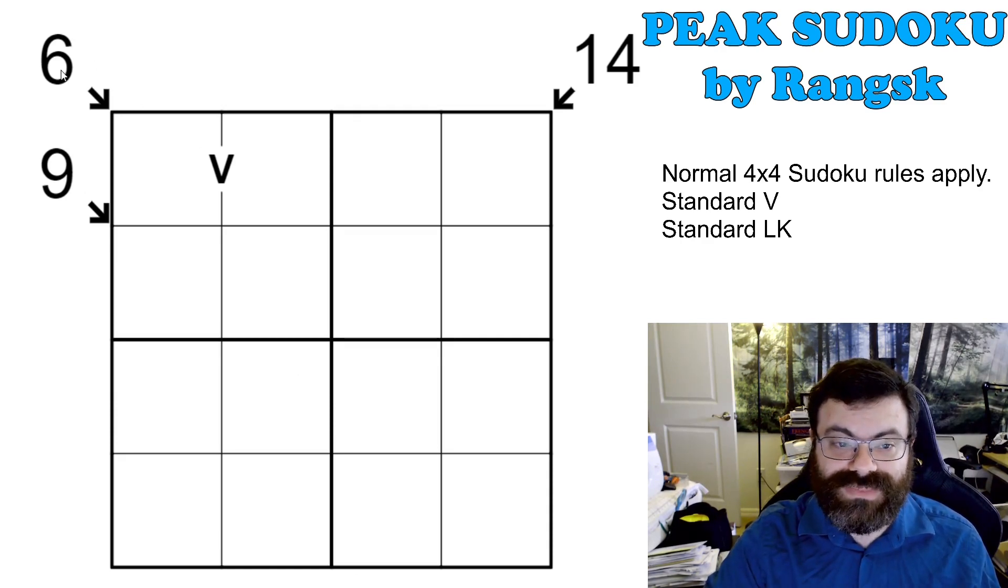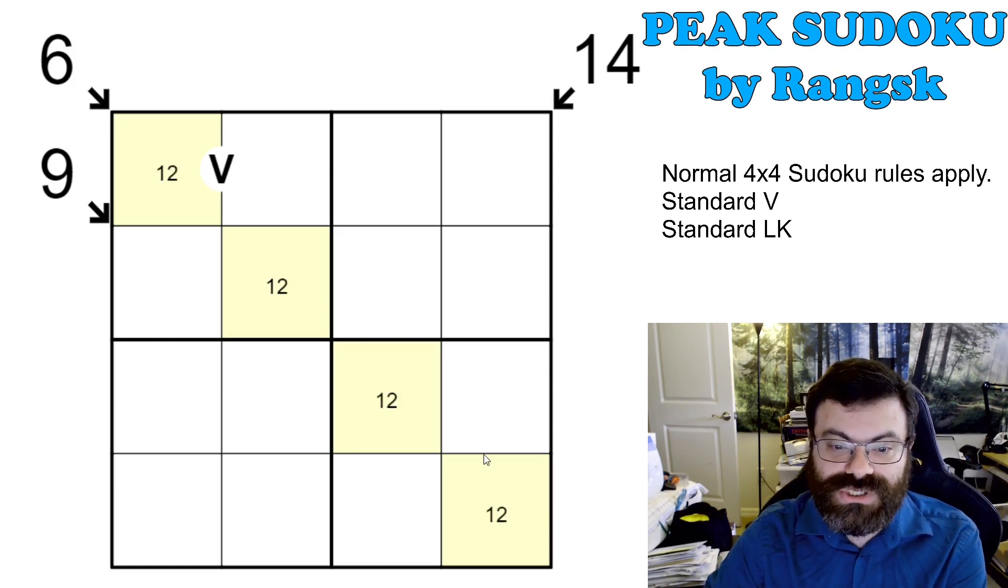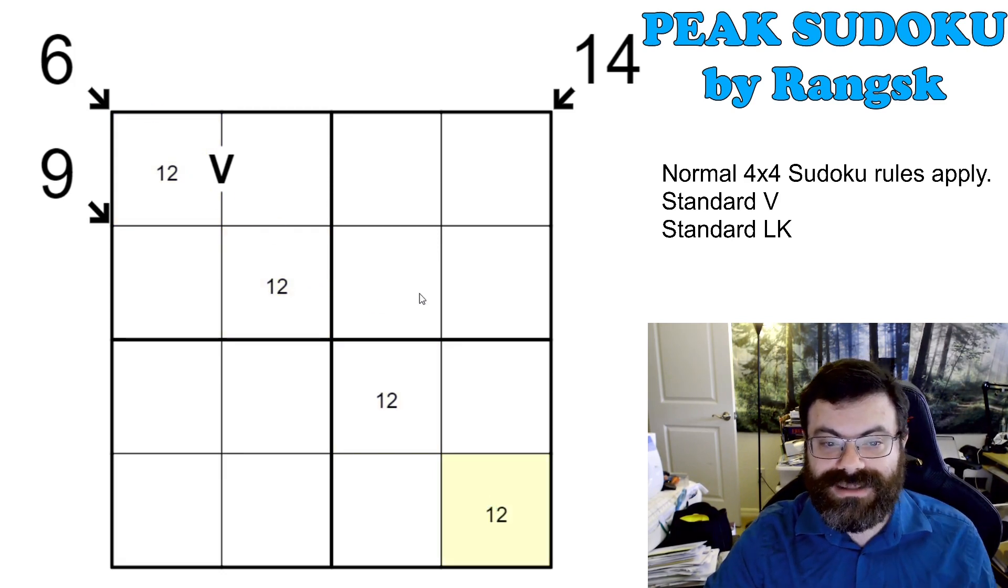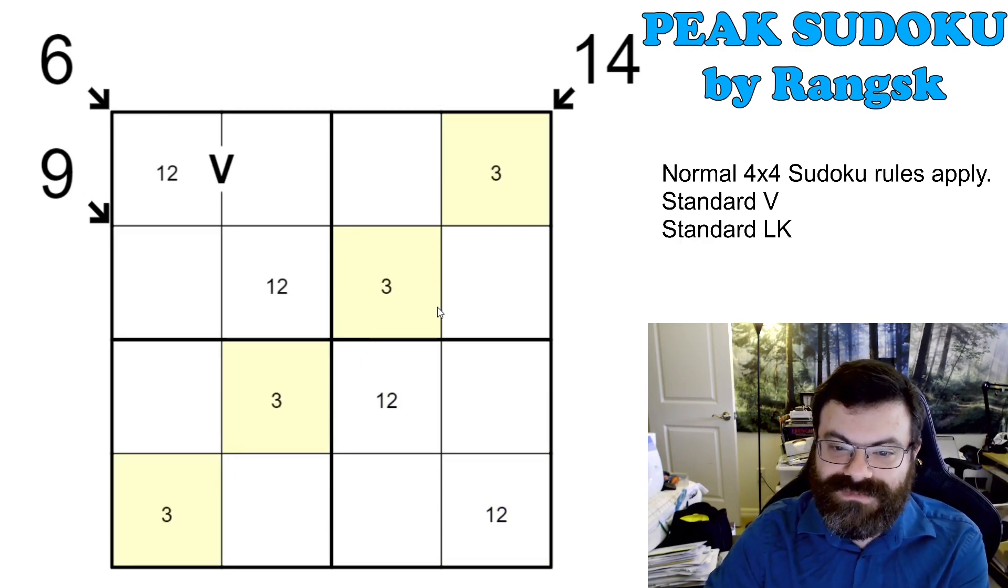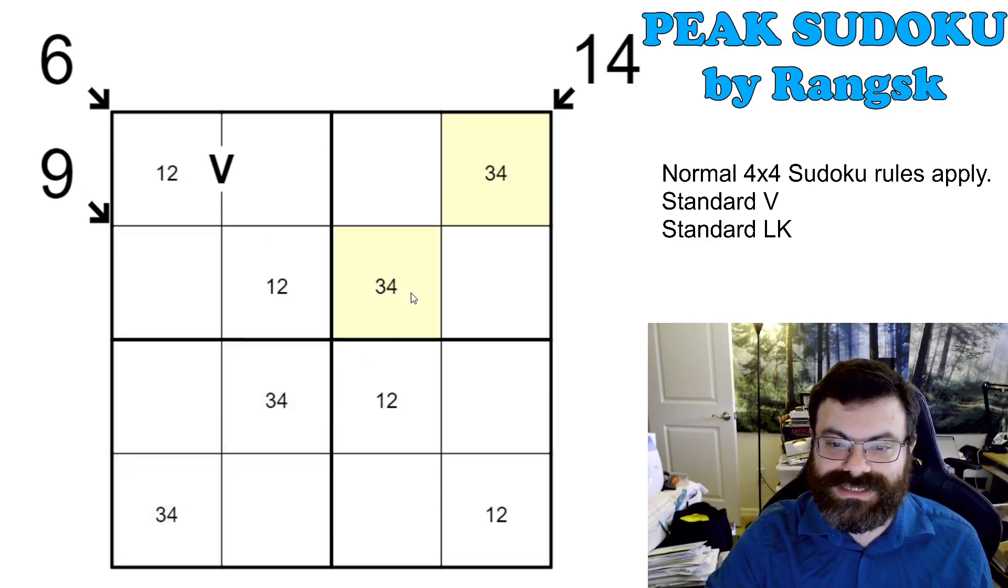So the first thing you can notice is that this 6 here actually has 0 degrees of freedom on it. These have to be 1, 2 minimum along the diagonal, and these add to 3, and these add to 3, and that is 6. And then if you look carefully, there's also a 14 little killer clue here, and these actually have to be maximum of 3 and 4 because these add to 7, and these add to 7, and that's 14.